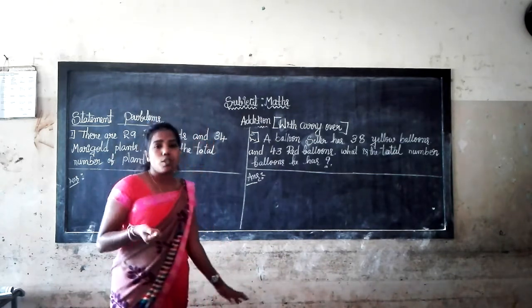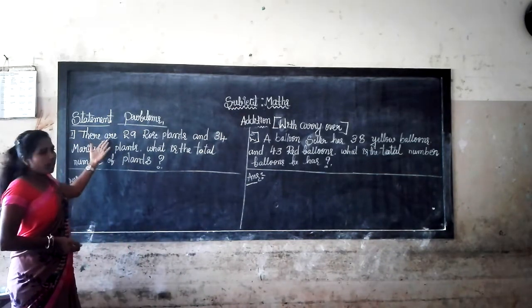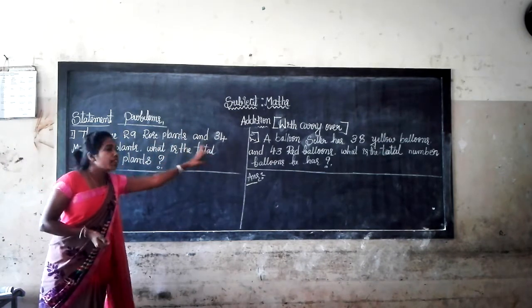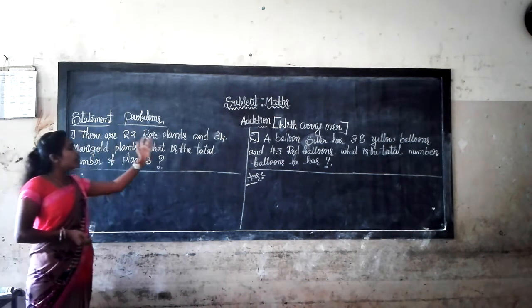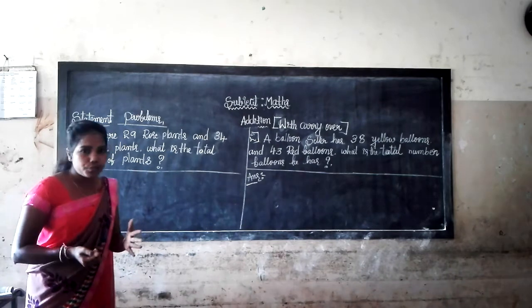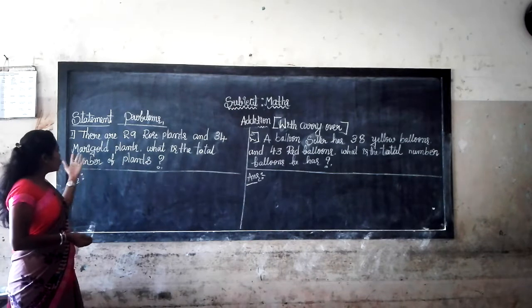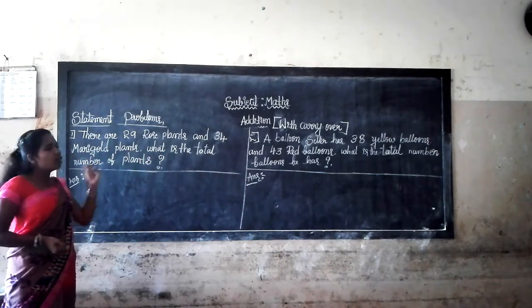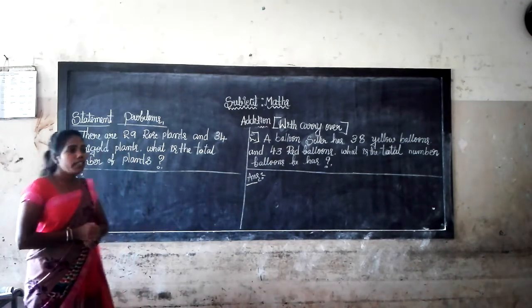So, let's see the statement problems. First one: there are 29 rose plants and 34 marigold plants. What is the total number of plants? You know very well how to write this statement.